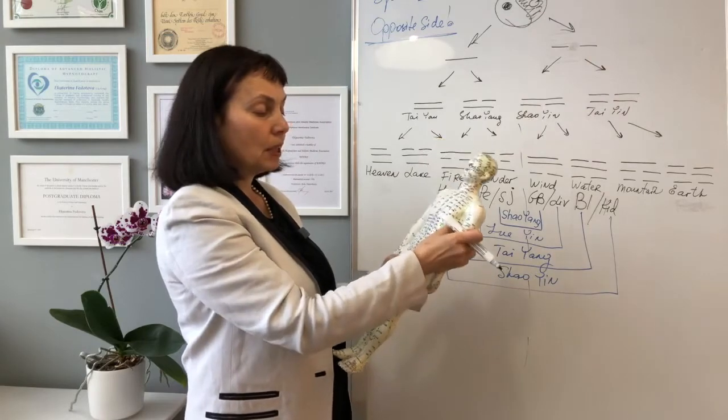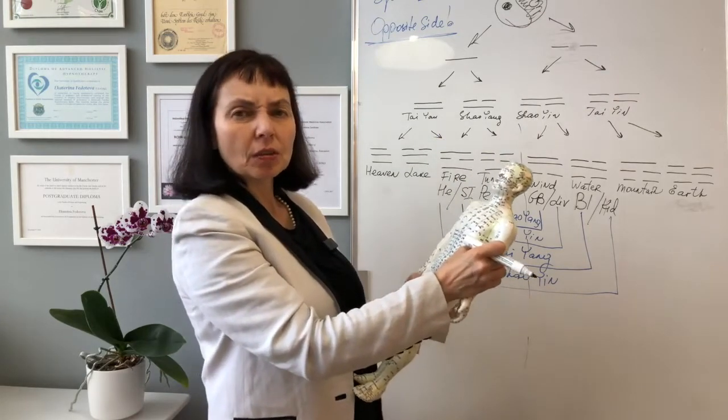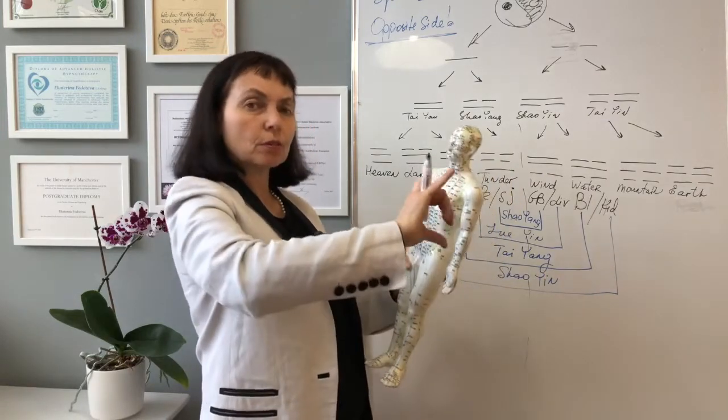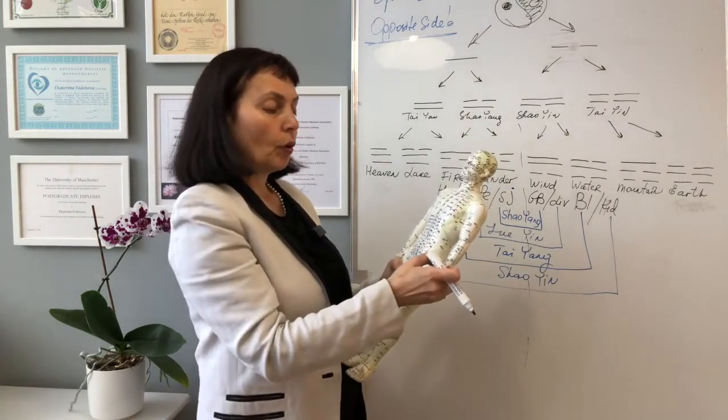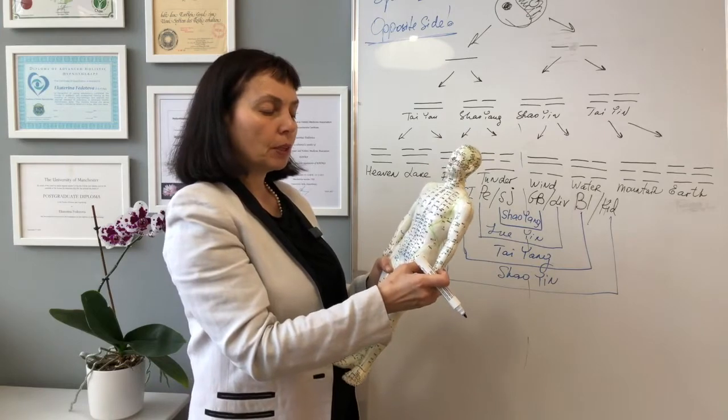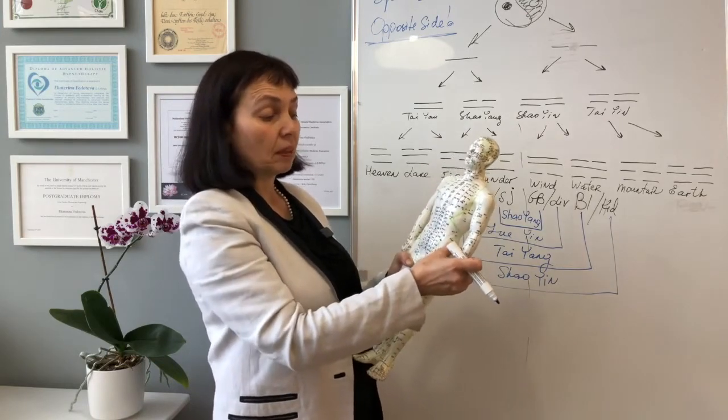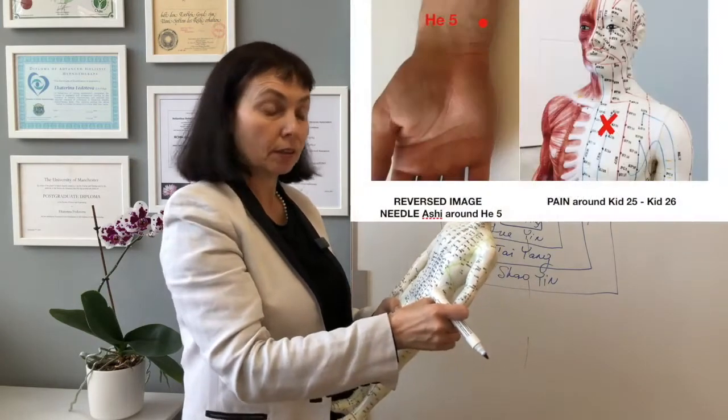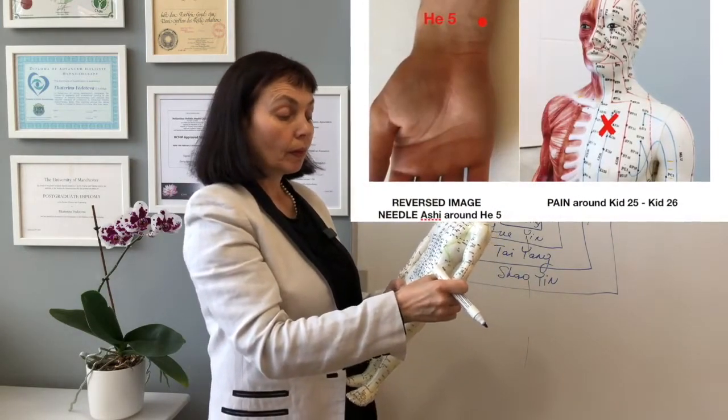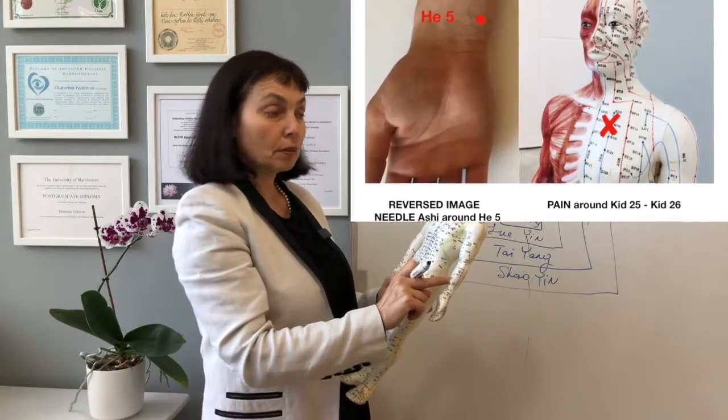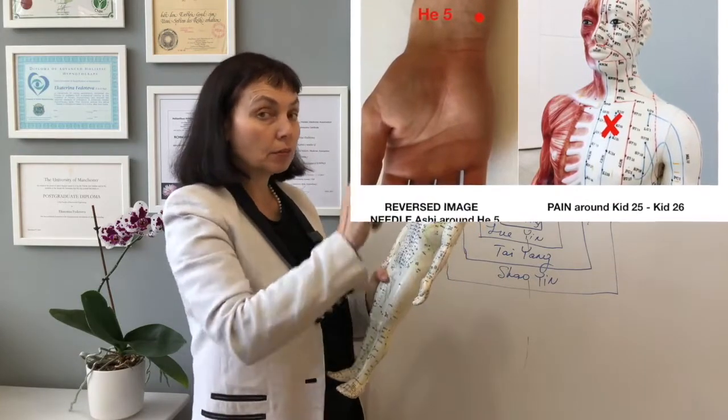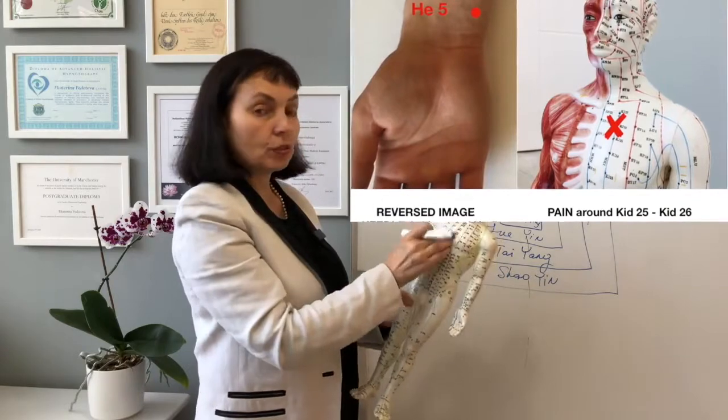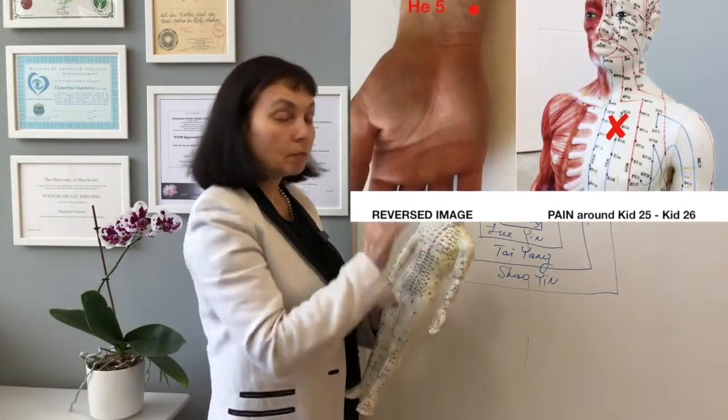But it's hard to needle the heart meridian on the upper arm. It goes towards the armpit crease. Let's use the reverse image. So the points on the heart meridian will be somewhere around, let's say, heart 5. So needling heart 5 and the area around heart 5 will balance the pain in the chest on the kidney meridian. No doubts.